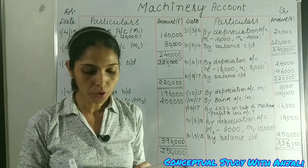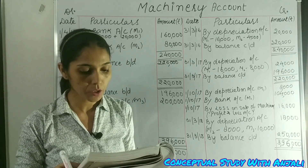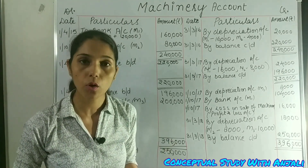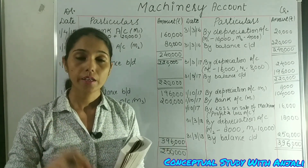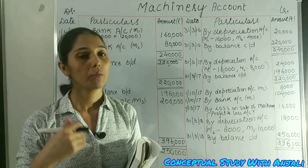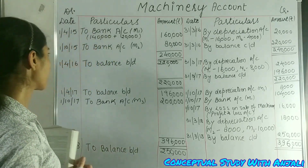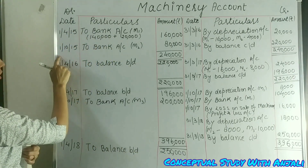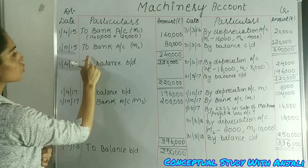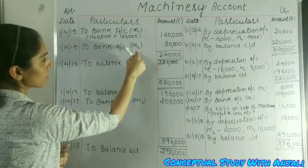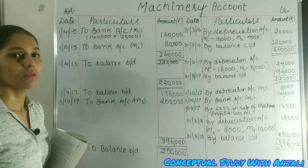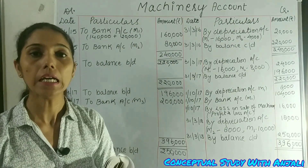On 1st October 2015, another machine costing Rs. 80,000 was purchased. So for 1st October 2015, we write bank account M2, Rs. 80,000, because there are no additional charges for this machine.